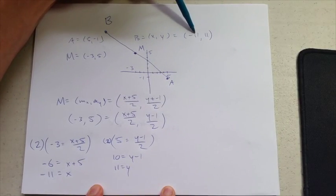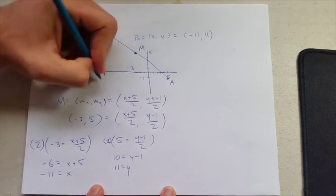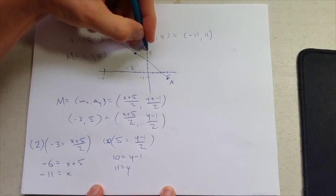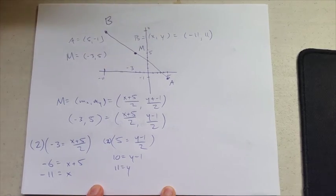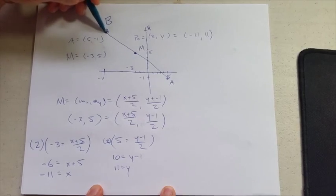So we got our point: (-11, 11). That makes sense—if I kept going with the axis, I'd have -11, and if I kept going up here, I would have positive 11. So there's our point B right there.